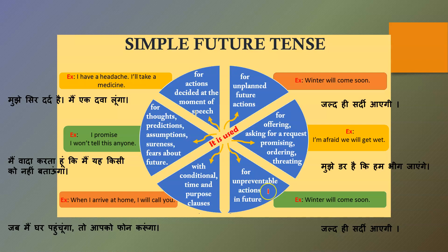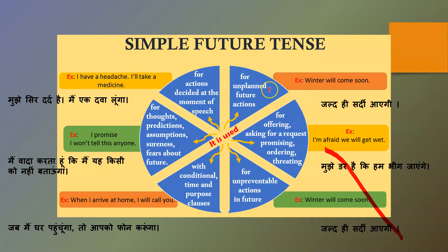Simple future tense is used for unpreventable actions in the future — things that will happen and cannot be stopped. For example, 'Winter will come soon.' It is also used for offering, asking for requests, promising, ordering, and threatening — for example, 'I am afraid we will get wet.' It is also used for unplanned future actions.